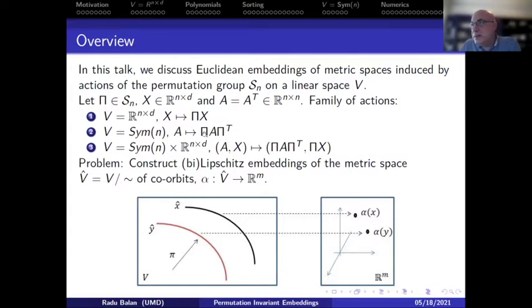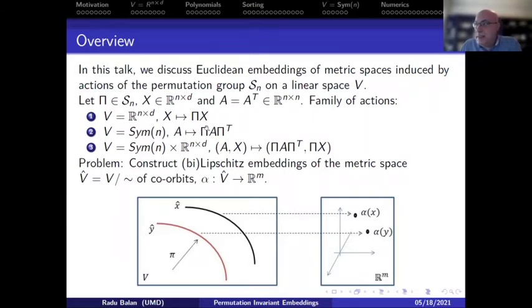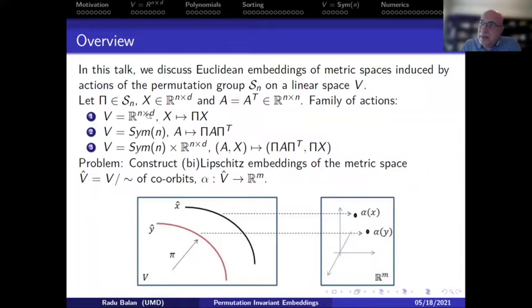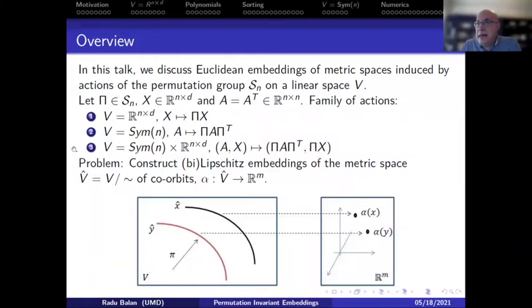The first action: take V as the space of tall matrices n by d, and the permutation matrix π acts on X by multiplication on the left — just row permutation of the matrix. The second action is on the space of symmetric matrices: a similarity transformation — you take the symmetric matrix A and multiply by π on the left and π-transpose on the right — a change of coordinates by a permutation matrix. The third action operates on a product of symmetric matrices crossed with n-by-d matrices.